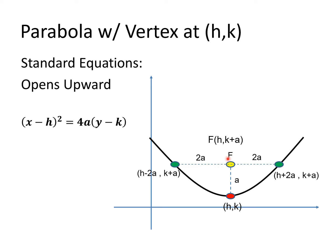For the two endpoints of the latus rectum, the movement from the focus is horizontal. So the h-coordinate of the focus changes while (k + a) remains the same. For the left endpoint, we subtract 2a from h, giving coordinates (h − 2a, k + a). For the right endpoint, we add 2a to h, giving coordinates (h + 2a, k + a). These are the coordinates of the vertex, focus, and the two endpoints of the latus rectum.